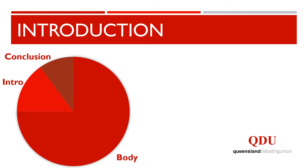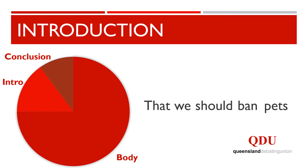For example, in the topic 'we should ban pets,' the key words are 'we,' 'ban,' and 'pets.' A definition for this topic might be that 'we,' being the Australian government, should 'ban,' to make illegal, the keeping of 'pets,' which are domesticated animals such as cats, dogs, and birds.